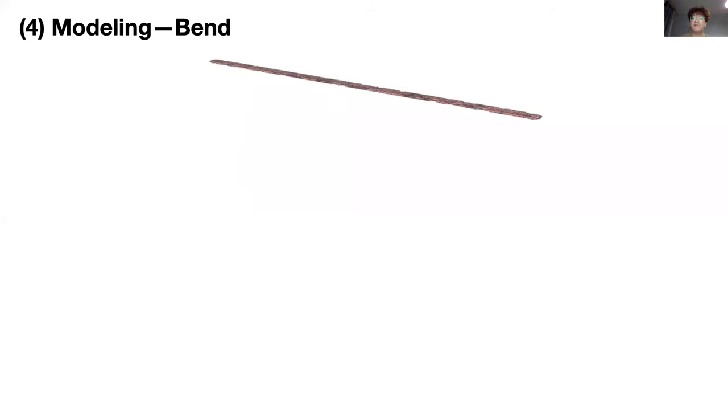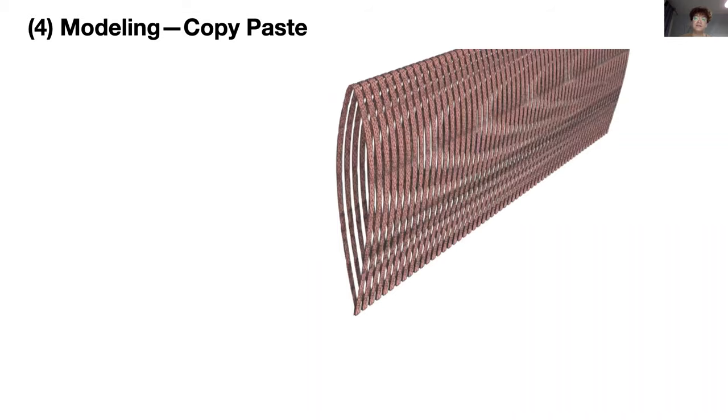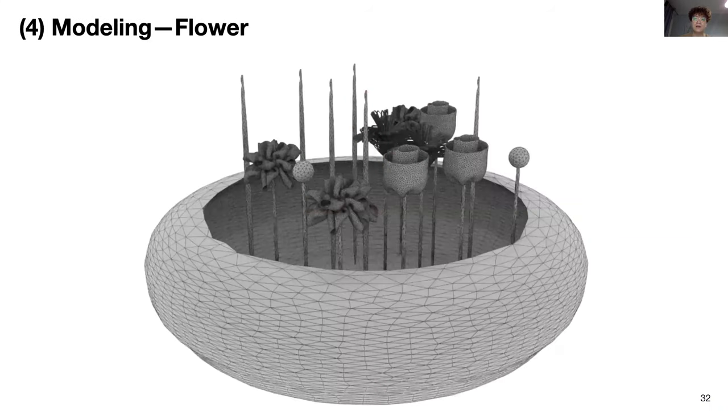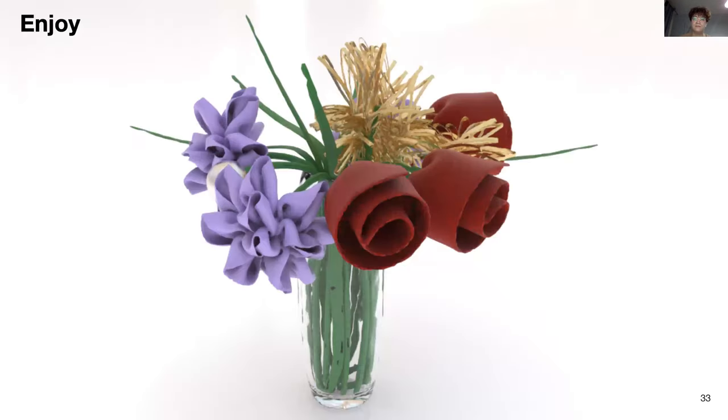Next, I can similarly fold and arrange artificial flowers, again starting with simple primitive shapes. For example, I can start by bending a strip, copy and paste it, and then winding. Similarly, I can create other flowers. Please see our paper for details. Once done, I can copy and paste the flowers in a bowl geometry, and then shrink the bowl to arrange them in a vase. Here is the final rendered view of the flower arrangement created by IDP.